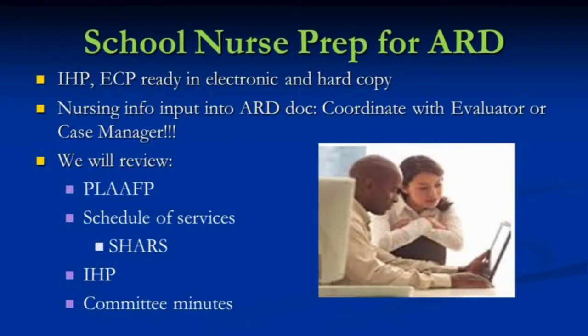The best way to make some of these points clear is to actually go through the ARD sequence and the documents and look at what those screens look like — where you would be expected to contribute information. We're going to look at the present levels of academic achievement and functional performance, the schedule of services, the individual health plan, and the committee minutes.